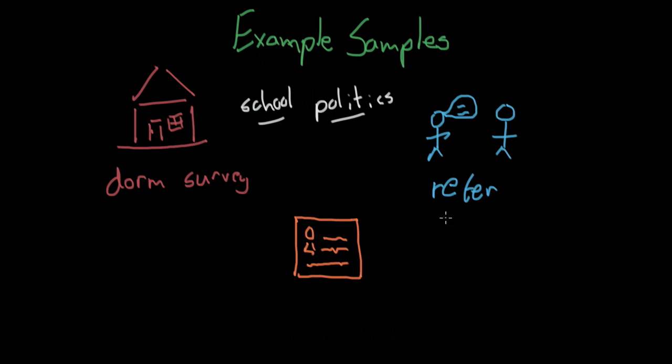What's the problem here? Well, again, if you're left-leaning, you're very likely to have left-leaning friends. And if you're right-leaning, you're also very likely to have right-leaning friends. So in both of these situations, you're likely to get back a sample that's either very left-leaning or very right-leaning that's not necessarily indicative of what the school's actual politics are.